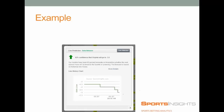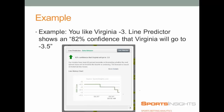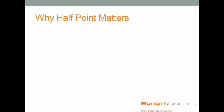Here's an example. I'll get into a real-life one, but I thought before I jumped in there, people could see this. In this case, we're looking at this Virginia-Florida State game. So if you already liked Virginia at minus three, we have a line prediction right now that shows an 82% confidence level that Virginia will go to 3.5. You can see the line chart below the predictions, the confidence level, kind of show you where it's been, what's happened since then, and where it's going.